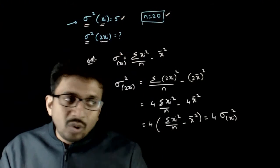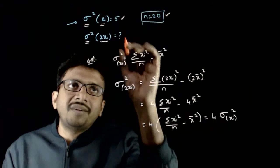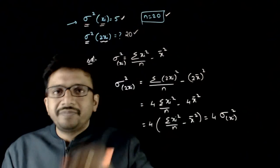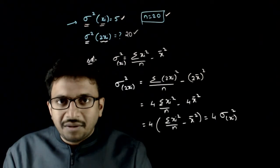Hence, the variance of 2xi's is nothing but 4 into 5 is equal to 20. So that will be the right answer to this question. Thank you.